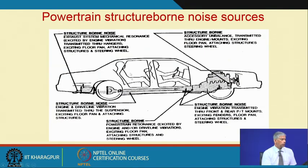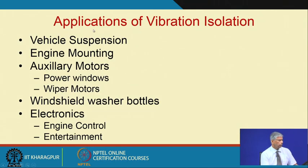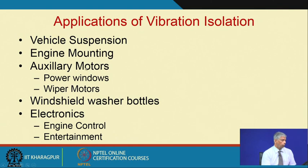In an automobile, to reduce structure-borne noise, there are lots of isolations put in all locations to reduce noise generated because of vibrations of the powertrain and drive line. Vibration isolation is present in a vehicle almost everywhere: vehicle suspension system, engine mounting, auxiliary motors like power windows, wiper motors, windshield washer bottles, and electronics — all of these will get affected if not properly isolated.